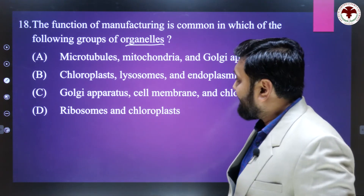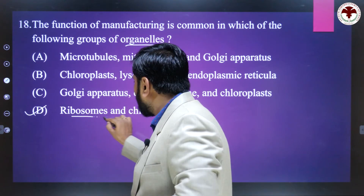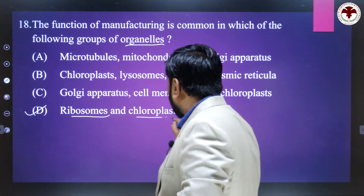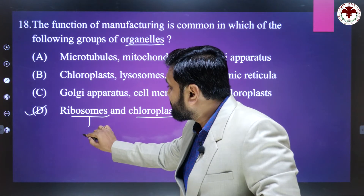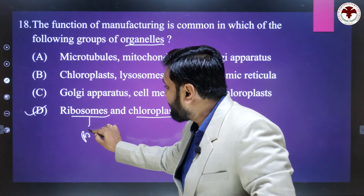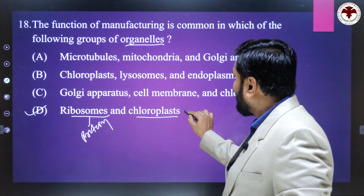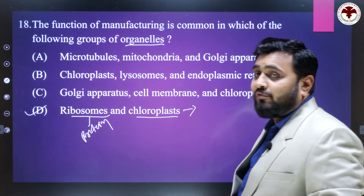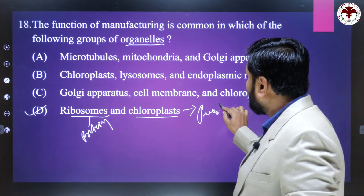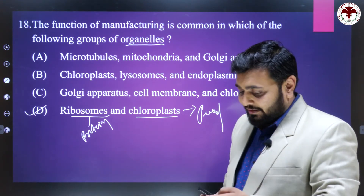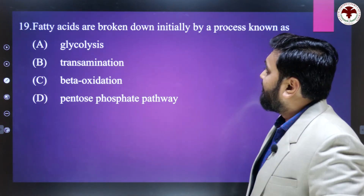Which organelle has the main function to manufacture products? The right answer is D — ribosome and chloroplast — because ribosomes produce or manufacture proteins, and chloroplasts perform photosynthesis and manufacture food.